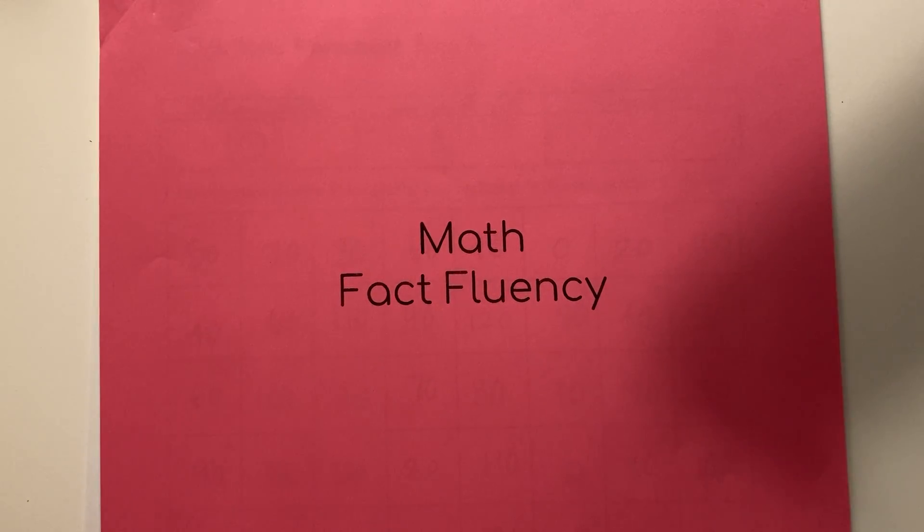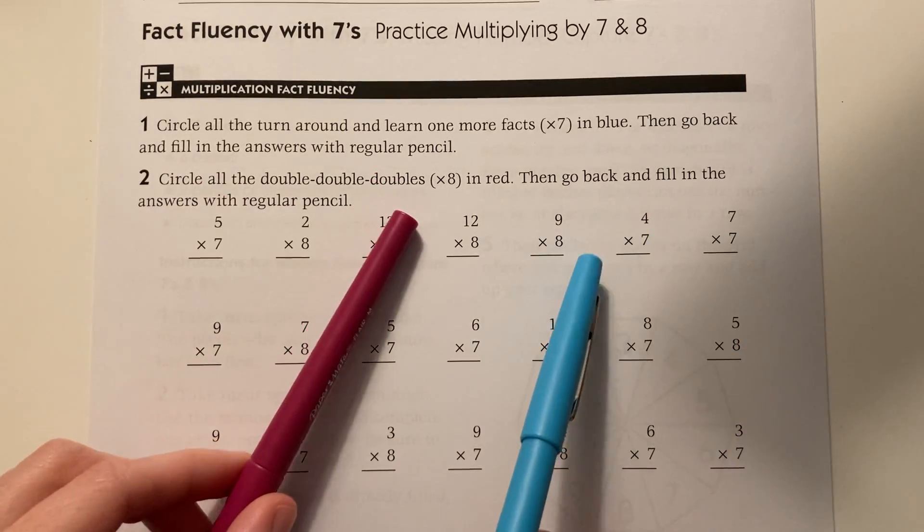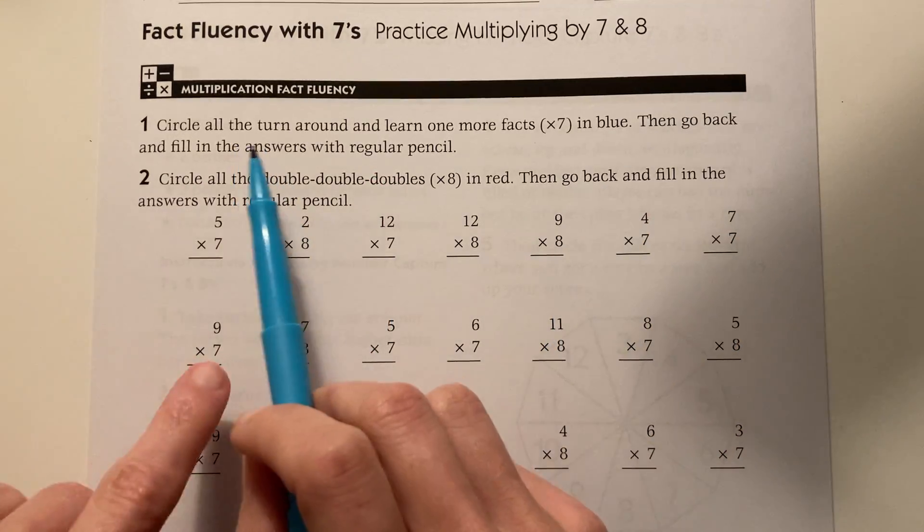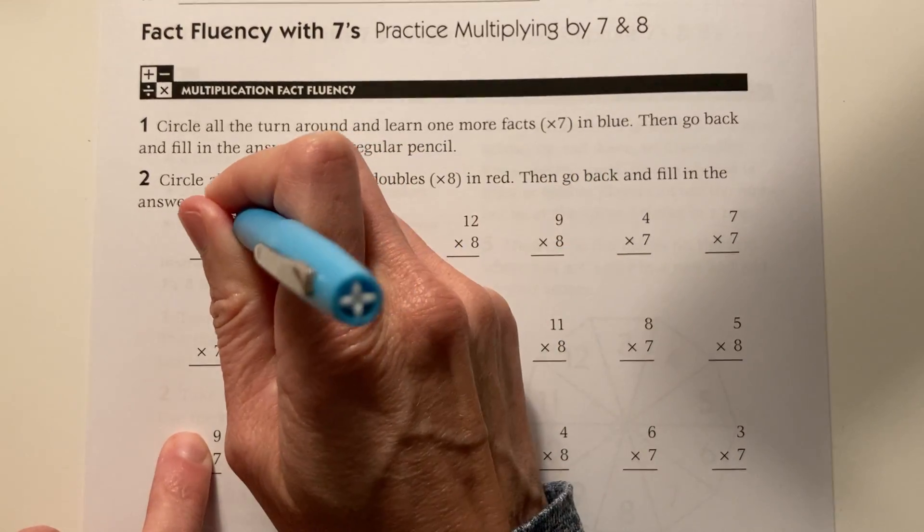This is my math fact fluency packet and I'm going to show you how to do sheet two, practice multiplying by seven and eight. For this you'll need two colors. Circle all the turn around and learn one more facts, the times sevens in blue. Then go back and solve them.